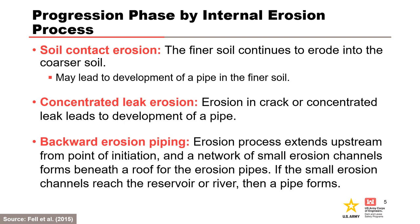Progression is the third phase of internal erosion. For soil contact erosion, erosion of the finer soil into the coarser soil continues and may lead to the development of a pipe in the adjacent soil. For concentrated leak erosion, erosion in a crack or concentrated leak leads to the development of a pipe. For backward erosion piping, the erosion process extends upstream from the point of initiation, and a network of small erosion channels form beneath a roof for the erosion pipes. If the small erosion channels reach the reservoir or river, then a pipe forms.